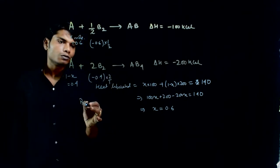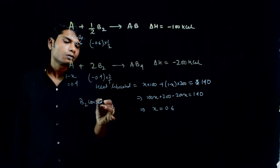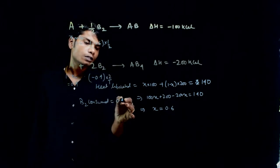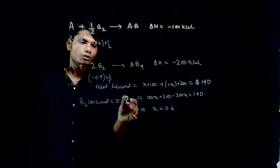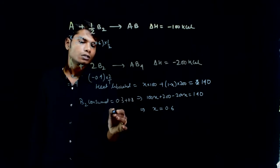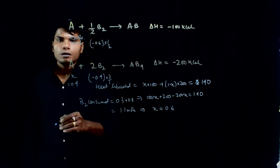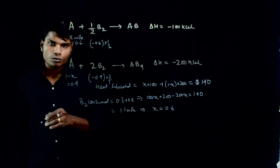So B2 consumed, total how much? From here comes 0.3 mole and from here comes 0.8 mole. So this is 1.1 mole. Right? So 1.1 mole B2 was consumed.